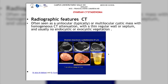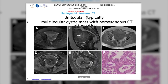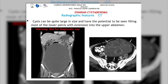We can also use CT scanning, which will show the unilocular or multilocular cyst with homogeneous attenuation, with or without a wall or septum, and sometimes vegetation outside. In these CT images we can see multilocular cysts, and as the images show, the tumor can be really large — we can see all the abdominal structures displaced because of the size of the tumor, practically filling the whole abdomen.